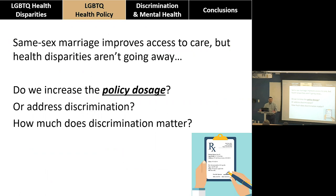What does a stronger policy dose look like? I think it looks like the Equality Act, which has passed the House of Representatives but not the Senate. This would ban discrimination in five settings: employment, housing, public accommodations — like trains, planes, hotels — health care facilities, financing and crediting, and education. We need public policy to prohibit discrimination in those settings so people feel safe in all aspects of their life.